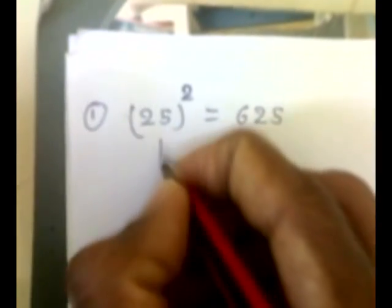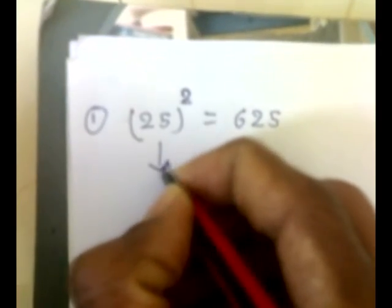We take a first example, suppose we want to, we'll take a simple example. Let's say 25. Now we want to square this number. We already know that the square of 25 is 625. Right, so I will show you the shortcut method.